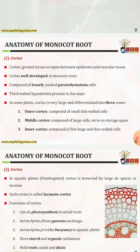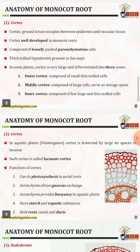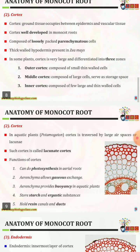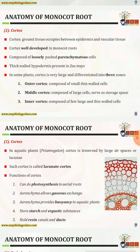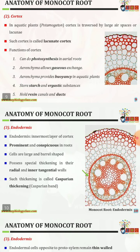The second part is the cortex, a ground tissue that occupies the region between the epidermis and vascular tissue. It is well developed in monocot roots and composed of loosely packed parenchymatous cells. In some plants, the cortex is differentiated into three zones: outer cortex of small thin-walled cells, middle cortex of large cells serving as storage space, and inner cortex of few large thin-walled cells. In aquatic plants such as Potamogeton, the cortex is traversed by large air spaces or lacunae.